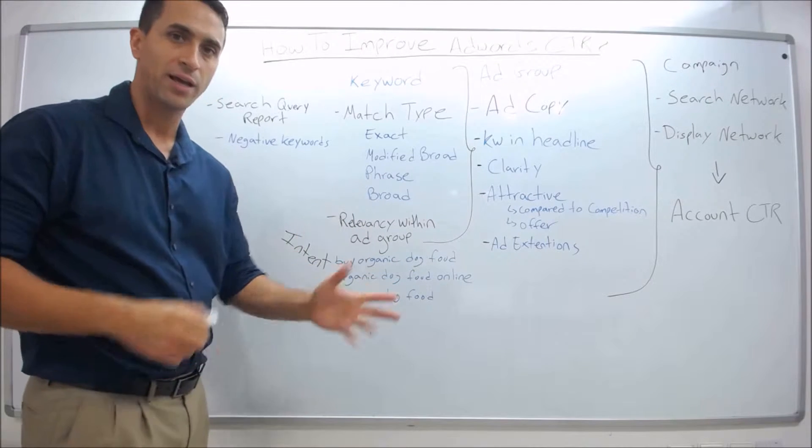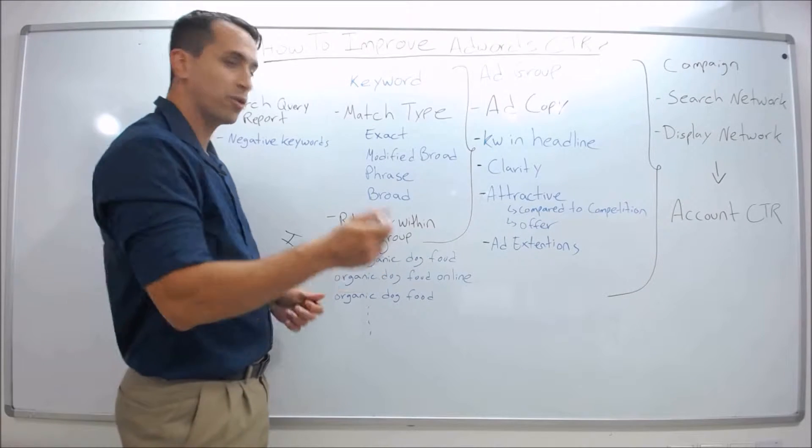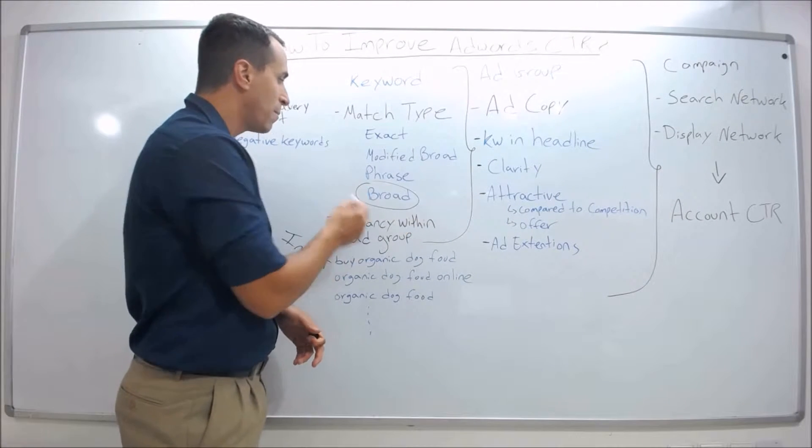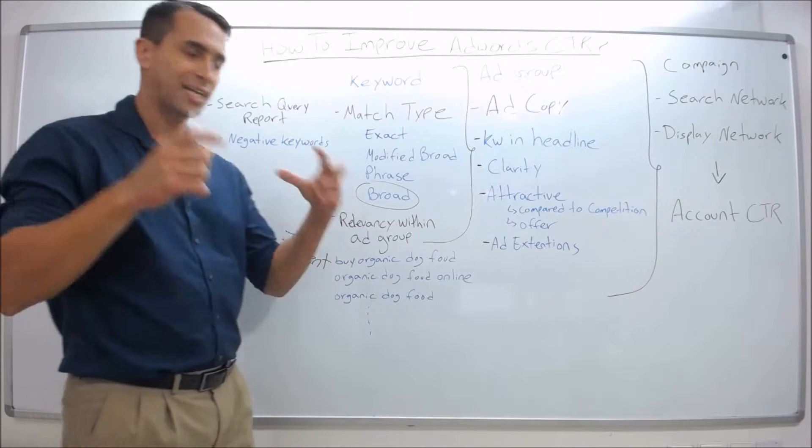So you would find that in the search query report and add negative keywords like recipe, recipes, how to make - brainstorm some ideas and add all those negative keywords. That will help your click-through rate with broad keywords and may help with phrase and modified broad. Exact match doesn't need this because it exactly matches.